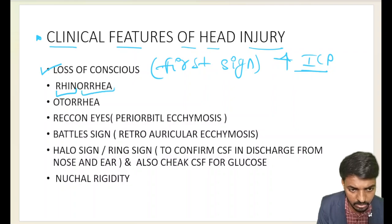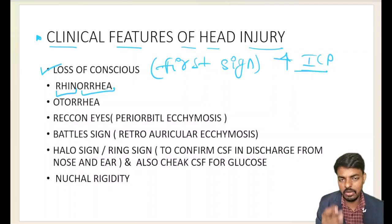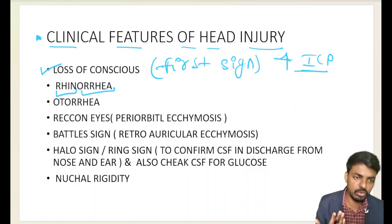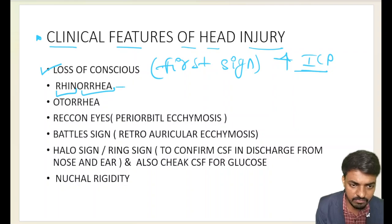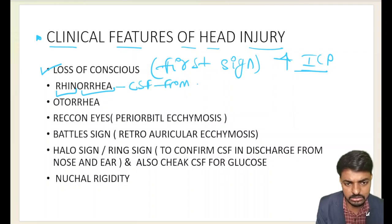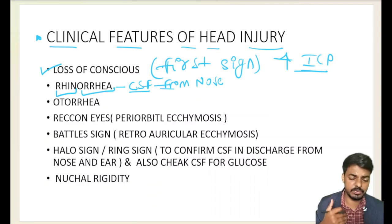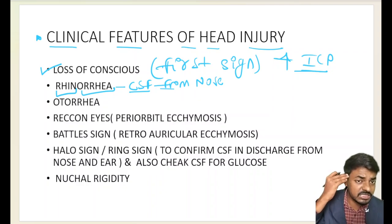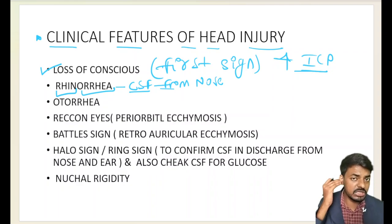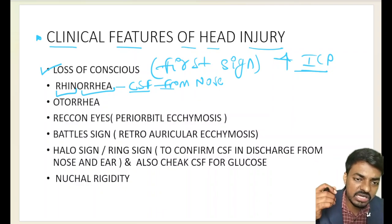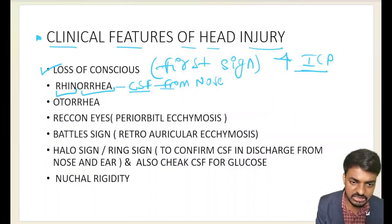The next clinical feature is rhinorrhea. 'Rhino' refers to the nose — as in rhinitis or rhinovirus — so rhinorrhea means CSF leaking from the nose. It occurs due to direct impact to the head causing a break in the ethmoid bone, which is the barrier between the nasal plate and the subarachnoid space, allowing cerebrospinal fluid to leak from the nose.